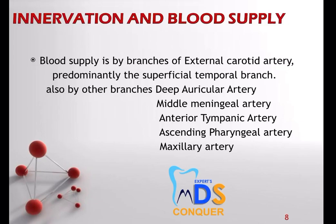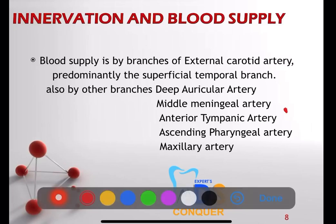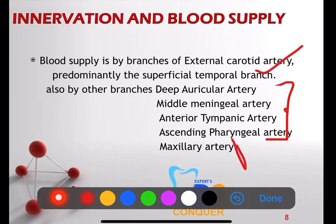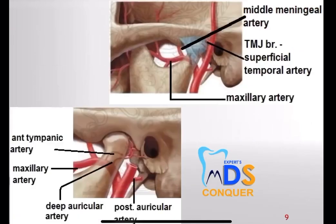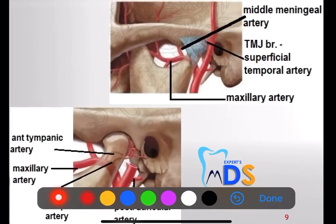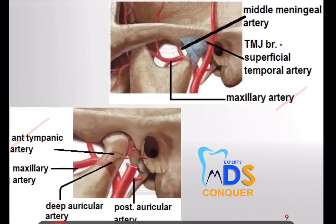Next we have to write the blood supply. All the arteries which supply the TMJ are branches of the external carotid artery, predominantly the superficial temporal branch, along with other branches. If possible, you can draw a diagram showing the TMJ joint along with the articular disc, the glenoid fossa, and the arteries — maxillary artery, tympanic artery, posterior auricular, and deep auricular arteries. You can just show the arteries; it is not mandatory, but if you can, it is better.